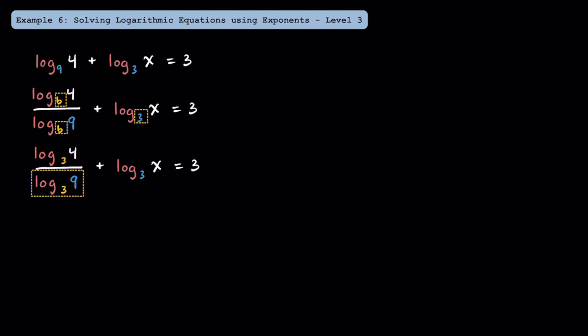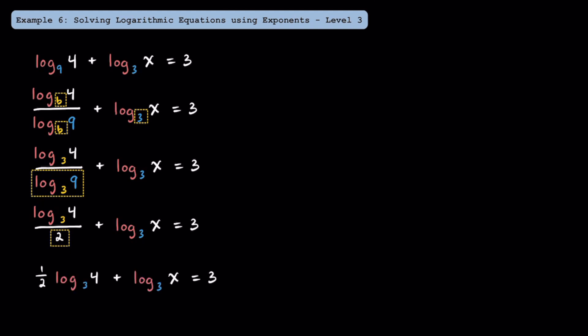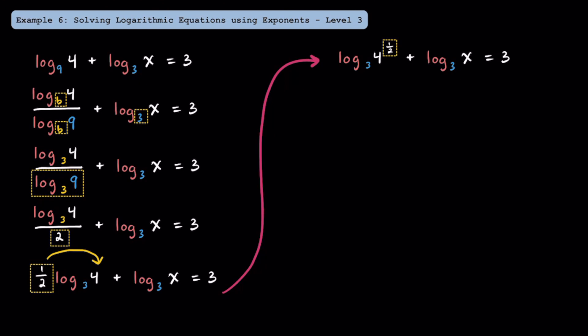This denominator is actually pretty nice. Log base 3 of 9 means how many 3's do you multiply to get 9? Since 3 times 3 is 9, log base 3 of 9 is just equal to 2. So we can write log base 3 of 4 over 2 plus log base 3 of x is equal to 3. Instead of dividing by 2, let's rewrite by multiplying log base 3 of 4 by 1 half, then use the log property to move this 1 half up as an exponent for the 4. We now have log base 3 of 4 to the 1 half power plus log base 3 of x is equal to 3. Now that we have the sum of two logarithms with the same base, we can condense them, writing log base 3 of 4 to the 1 half power times x is equal to 3.